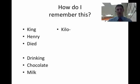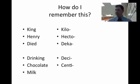Now, what does that mean? The king is kilo, Henry hecto, died is deca, drinking deci, chocolate centi, and milk is milli.